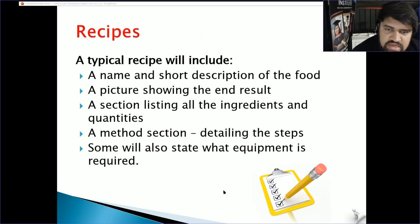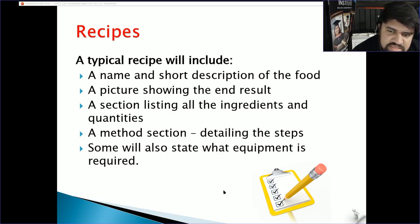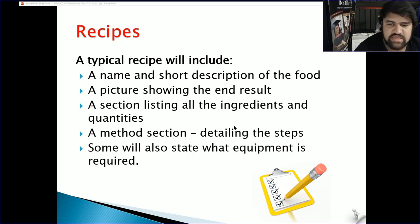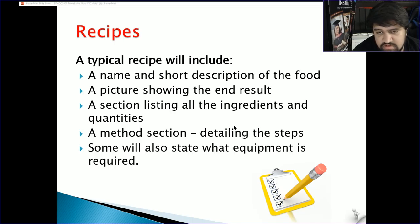A typical recipe includes a name, a short description of the food, a picture showing the end result, a section listing all the ingredients and quantities required, and a method section detailing the steps you'll need to follow and some of the equipment you'll need during the production process.